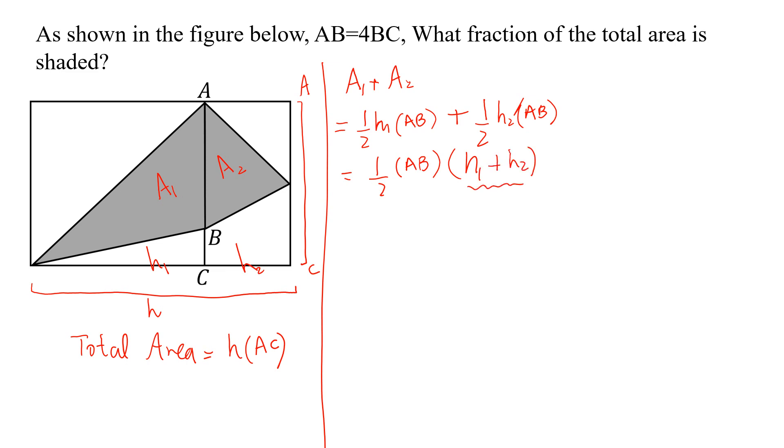H1 plus H2 equals H, so this equals half of AB times H. But we will calculate the shaded part in terms of AC because the total area involves AC. So let this be equation 1.